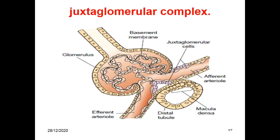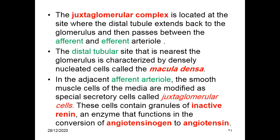Our topic today is the juxtaglomerular complex. The juxtaglomerular complex is located at the site where the distal tubule extends back to the glomerulus, passing between the afferent and efferent arterioles. The distal tubule side that is nearest to the glomerulus is characterized by densely nucleated cells called macula densa. Macula densa cells are densely nucleated cells related to the distal tubule, situated close to the glomerulus.